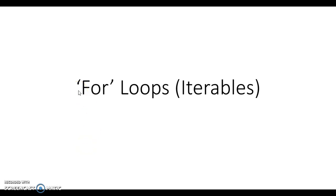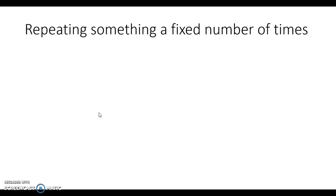In this video we're going to take a look at for loops, also known as iterables, because for loops are going to iterate or repeat something a certain number of times. For loops are useful when you want to repeat something a known number of times. There are other loops, such as the while loop, which will do something until some event happens, but a for loop has a finite end time.